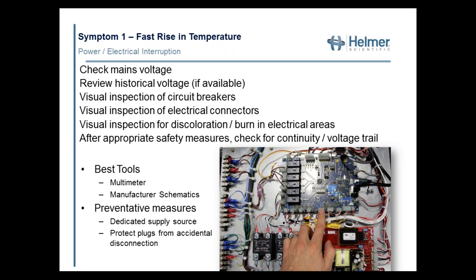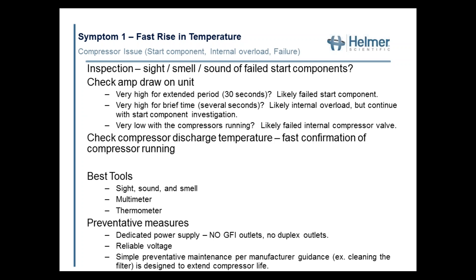Preventive maintenance measures include making sure you have a dedicated supply power source and that plugs are secured from being accidentally disconnected. Brian added that when units are lined up in a hall and a cleaning crew uses the same outlets for vacuum cleaners and cleaning equipment, overloading those circuits will trip everything. It's really important in your facilities to use dedicated circuits that are well marked and very clear to prevent those kinds of interruptions.